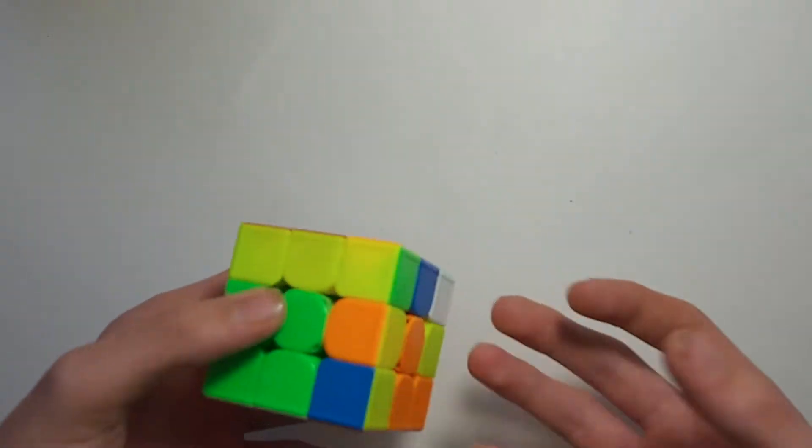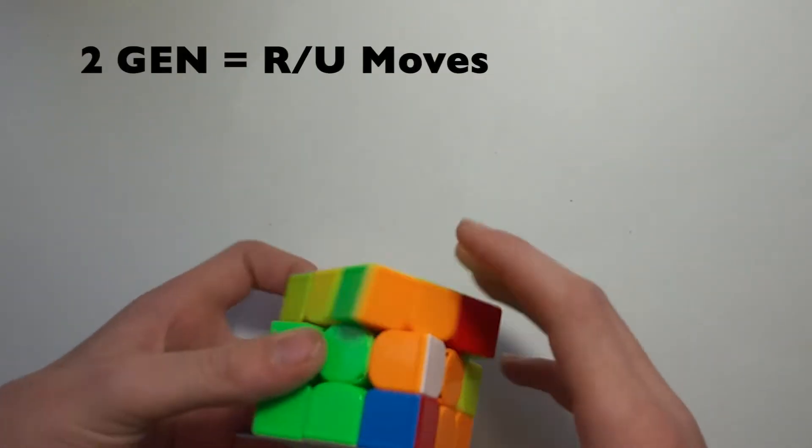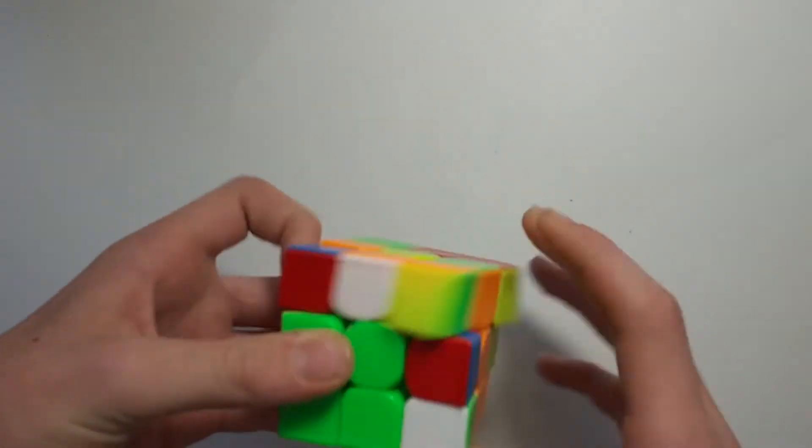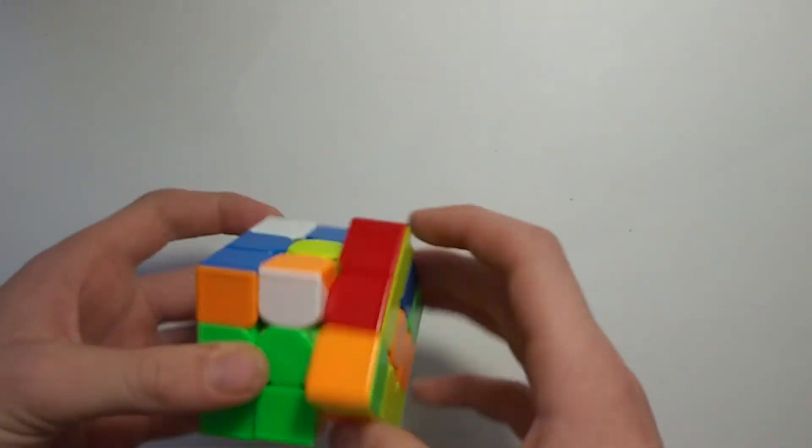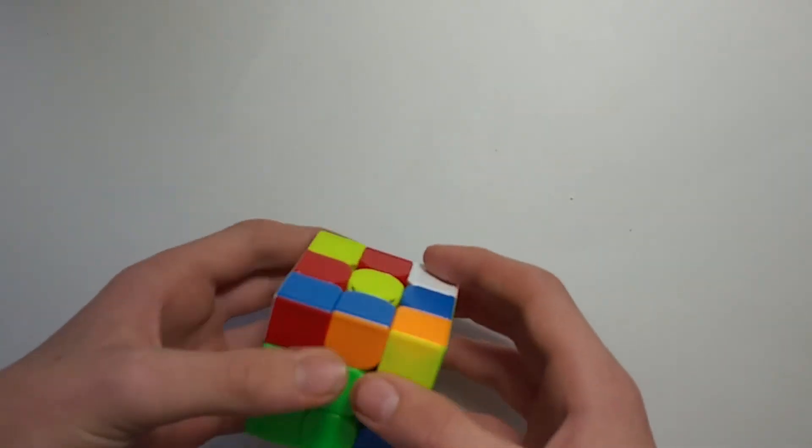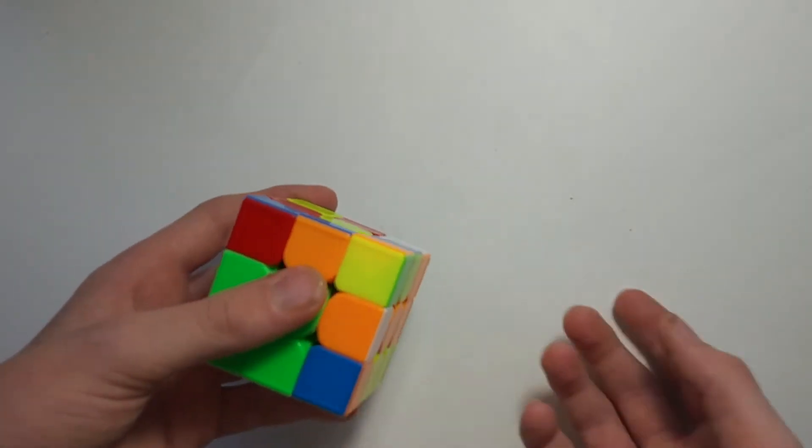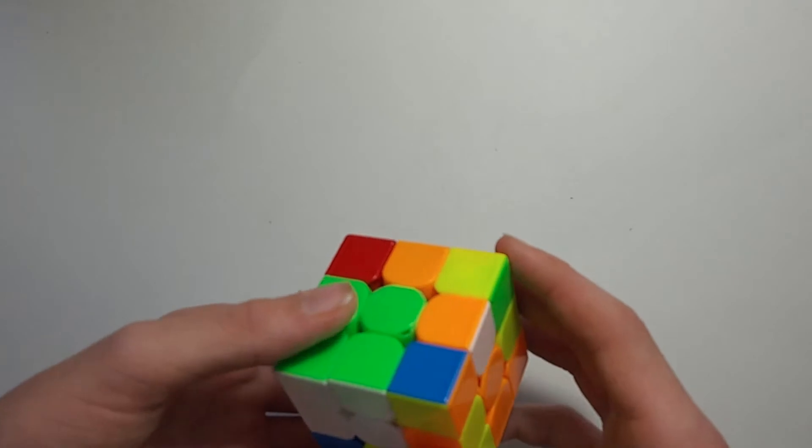I recommend starting off with 2-gen like I just said, so only using R and U moves. That should just be super simple. It's just a good start to get off with. Because it is a little bit easier and eventually you'll be able to turn on all faces and start to speed up more.